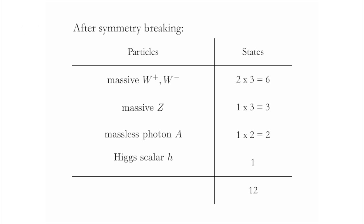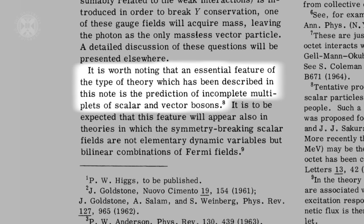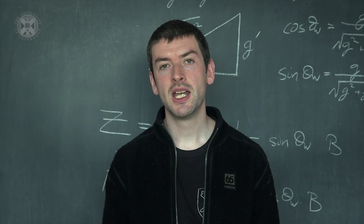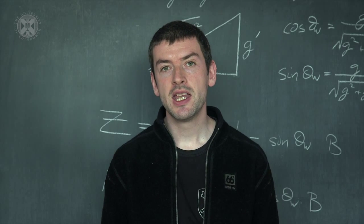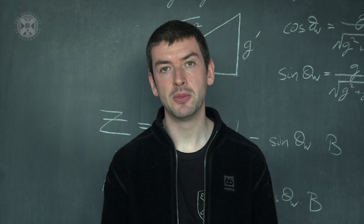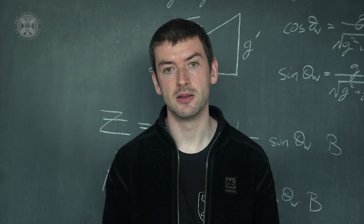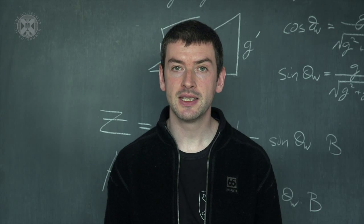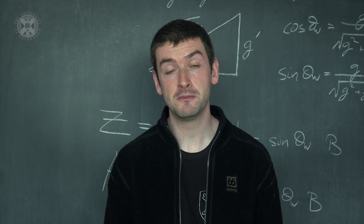One interesting thing about this model is that we only wanted to get a W plus and W minus to explain beta decay, but along the way we found an extra massive boson — the Z boson. This was a prediction of the model, and it was discovered at CERN in 1983. In his 1964 paper, Peter Higgs made an important prediction: the theory predicts incomplete multiplets of scalar and vector bosons. It's just such a scalar boson that has been discovered — it forms an incomplete multiplet in the sense that before symmetry breaking our theory had four scalar bosons, but after symmetry breaking only one remained. This incomplete multiplet of scalar bosons is what we interpret as the physical Higgs scalar.